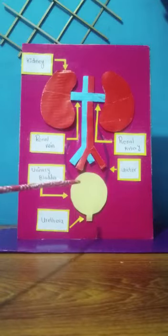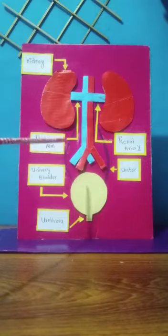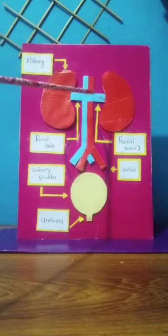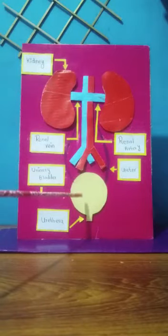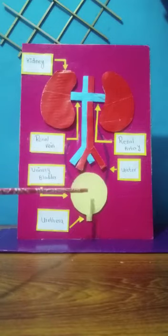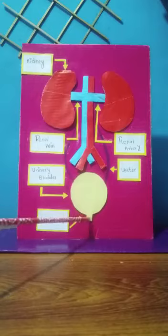In short, the renal system: there are two kidneys in the human body. Each kidney has a cortex, medulla and pelvis which connect to the ureter. Both ureters go down and enter into the urinary bladder. Urine is stored in the urinary bladder, which connects to the urethra for urination.